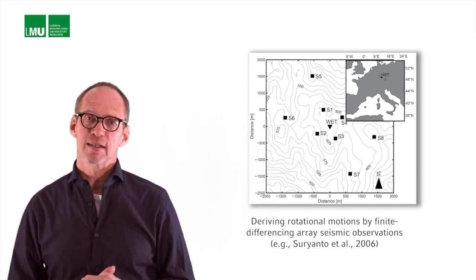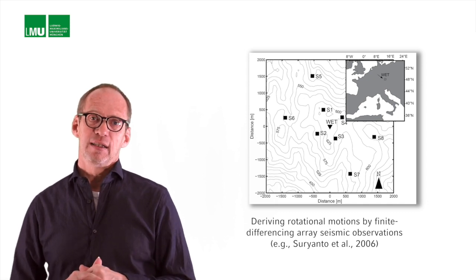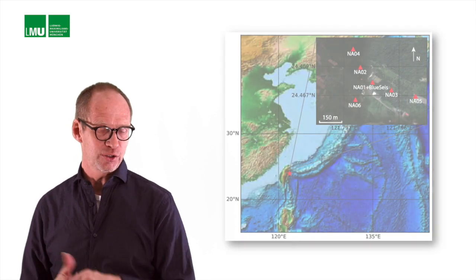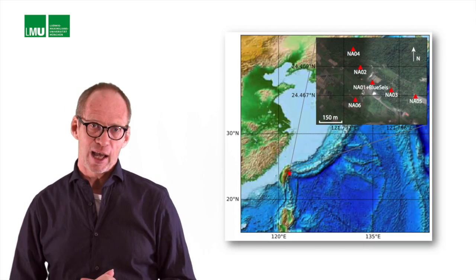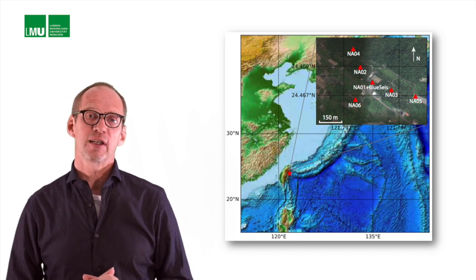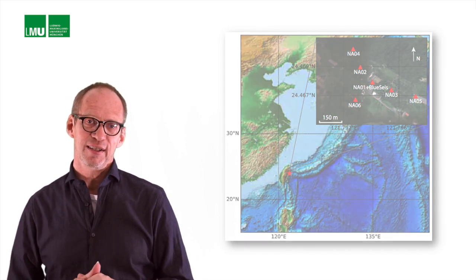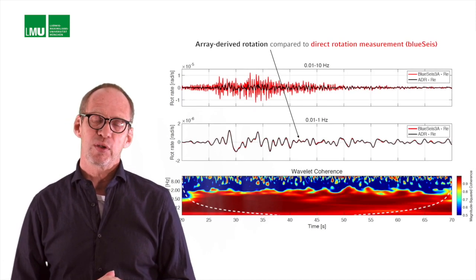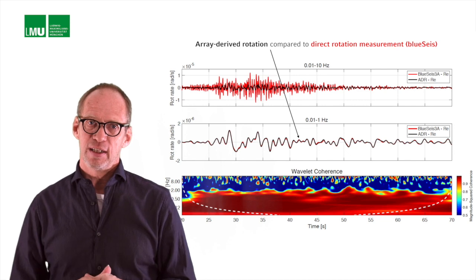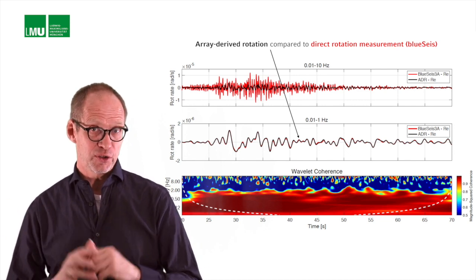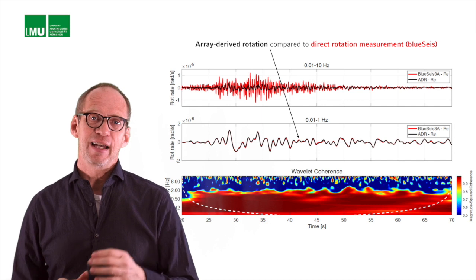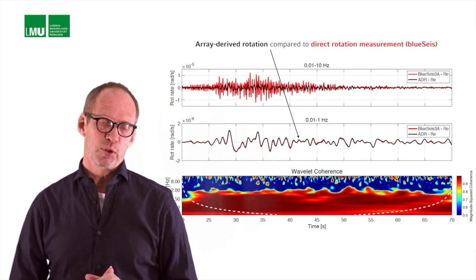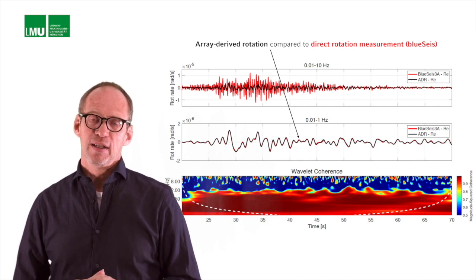Under beneficial circumstances, you can compare the array-derived rotation with the direct observations, for example, at the center of this array. This was done for an array in Taiwan with our Taiwanese colleagues, and you can see here, that's maybe the most expressive graph in the paper, a comparison between such an array-derived rotation recorded with totally different physical principles and the direct observation using this blue-sized sensor that was developed by IX Blue.